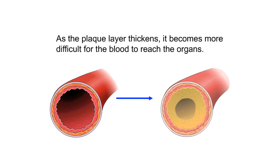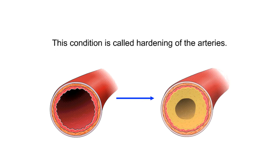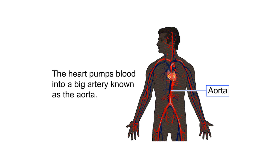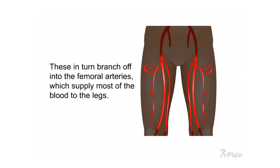This condition is called hardening of the arteries. The heart pumps blood into a large artery known as the aorta. The aorta divides into two main arteries in the abdomen called the iliac arteries. These in turn branch off into the femoral arteries, which supply most of the blood to the legs.